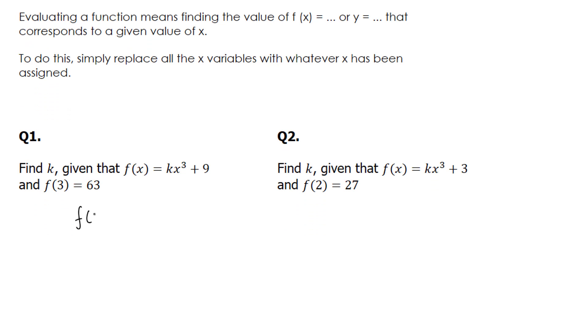f at 3 is equal to. Now, every instance of x will be replaced with that 3, except for this k. And when you replace a variable with a number, you place it in parentheses. 3 to the power of 3 is 27 times k is equal to 27k plus 9.